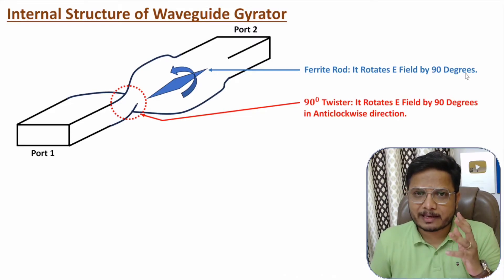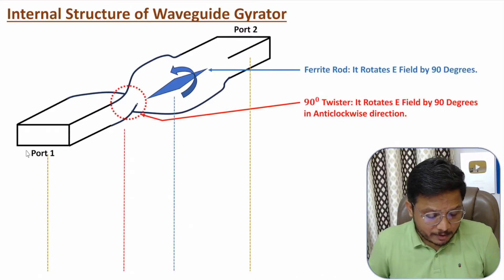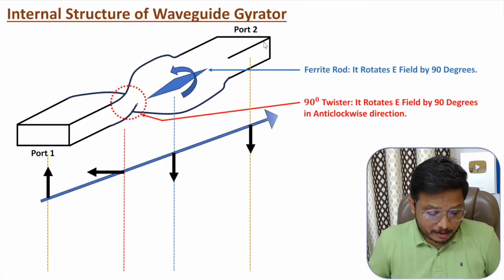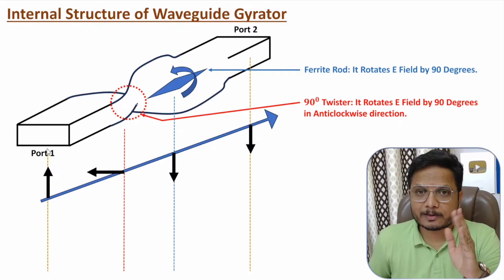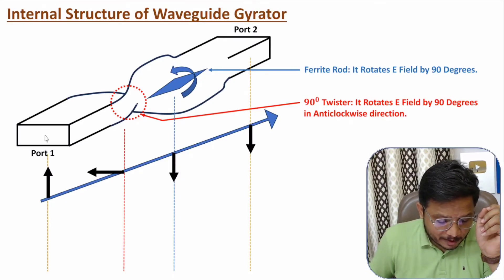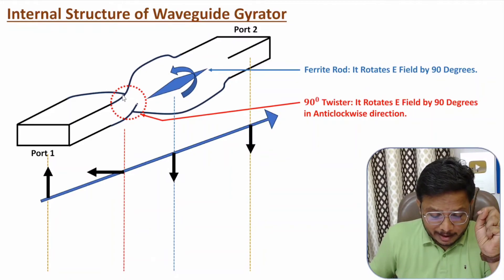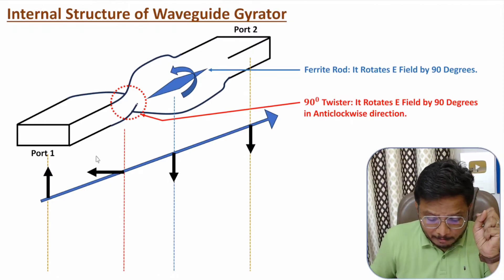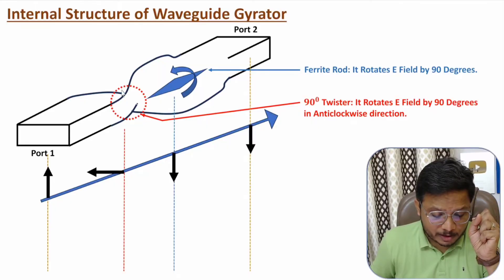I will explain how exactly the working occurs. When input is given at port 1, the signal flows in this direction. At port 1, we are providing a vertically oriented polarized signal, so the electric field is vertically oriented. This vertically oriented electric field comes to the 90-degree twister, which rotates it by 90 degrees in the anti-clockwise direction. So after passing through the 90-degree twister, the electric field is at a 90-degree angle in this direction.